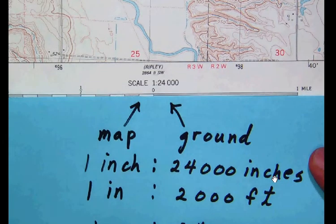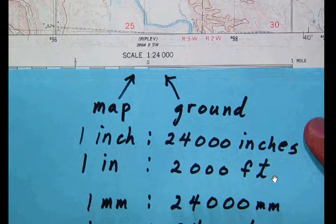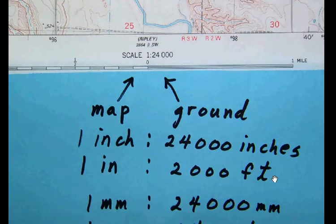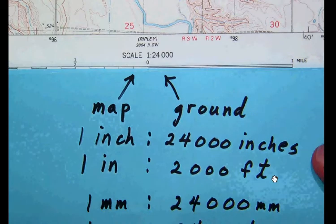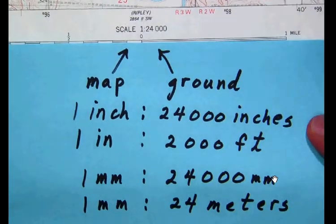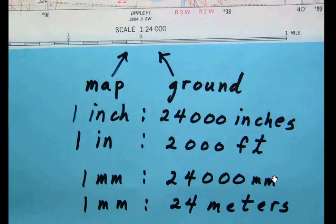Now since the scale is 1 to 24,000, then that means that one millimeter on the map would correspond to a distance of 24,000 millimeters on the ground. And since there are 1,000 millimeters in every meter, that means that one millimeter on the map corresponds to a distance of 24 meters on the ground.